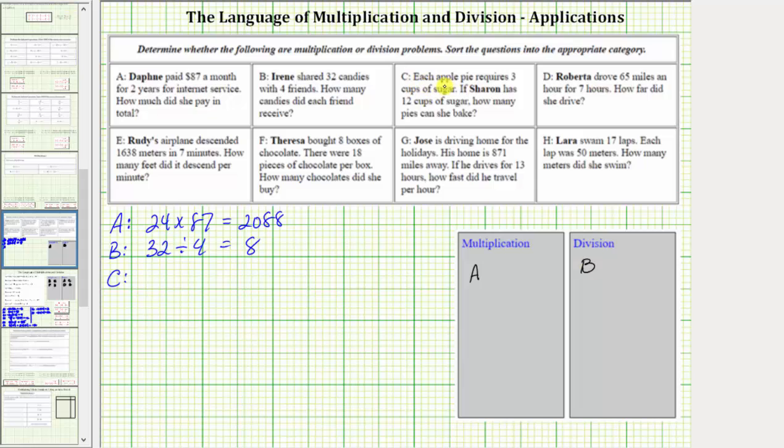For C, each apple pie receives three cups of sugar. If Sharon has 12 cups of sugar, how many pies can she bake? Because each pie requires three cups of sugar and she has 12 cups of sugar, if we determine how many threes in 12, we can determine how many pies she can bake.